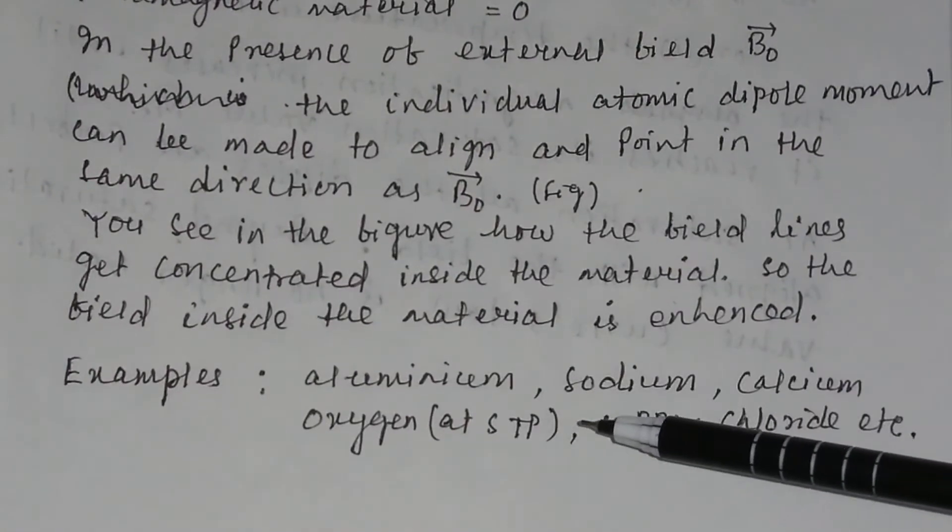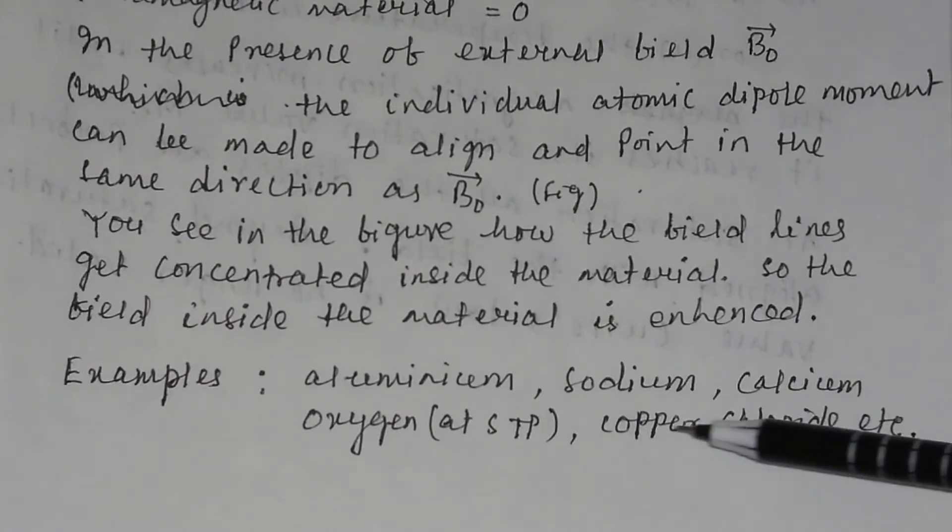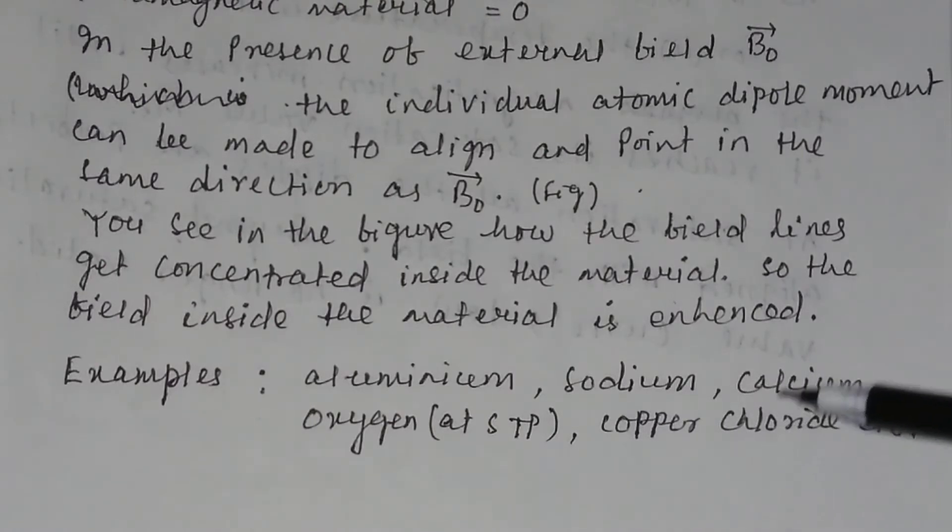Examples of paramagnetic materials are aluminum, sodium, calcium, oxygen at STP, copper chloride, etc.